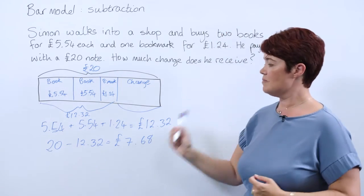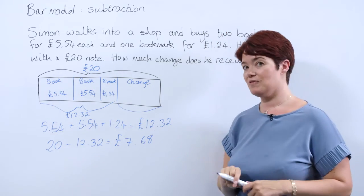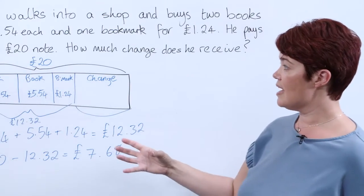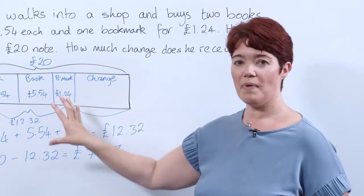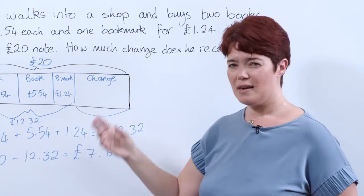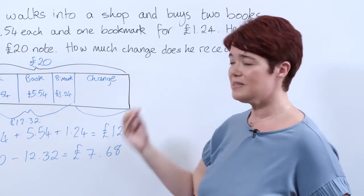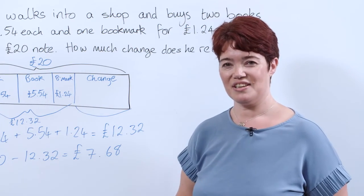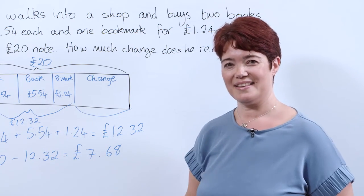And that is how much change Simon receives. So we've seen here now that we can use our bar model in a complex multi-step problem with subtraction to find our answer.